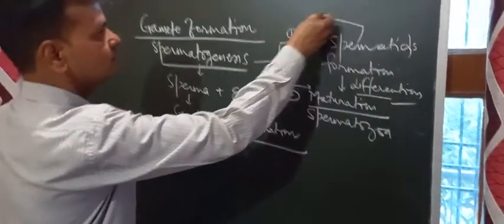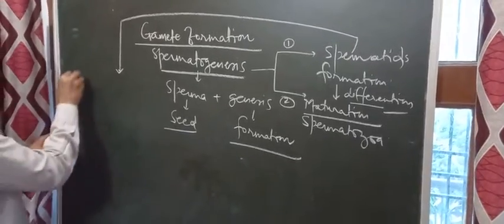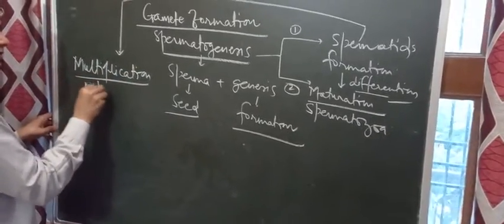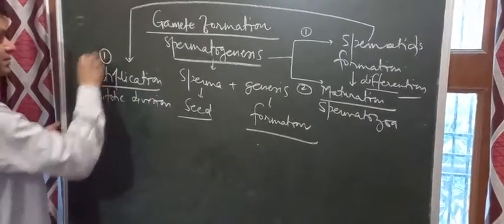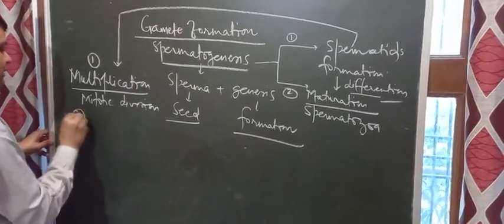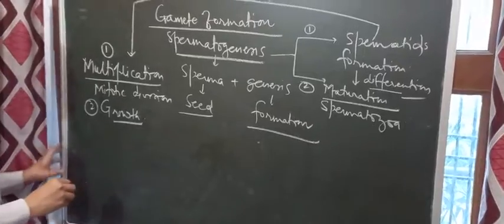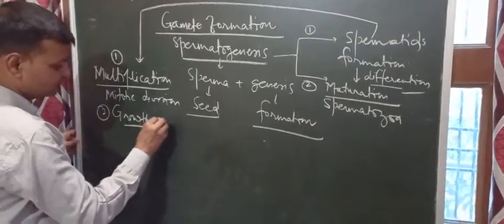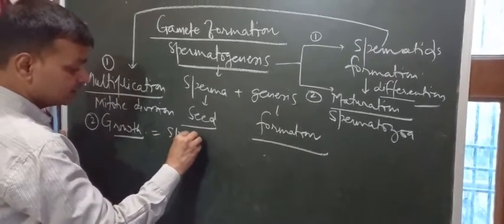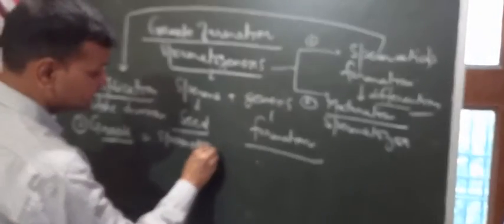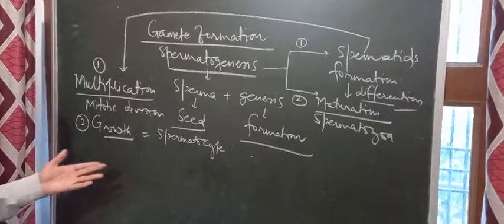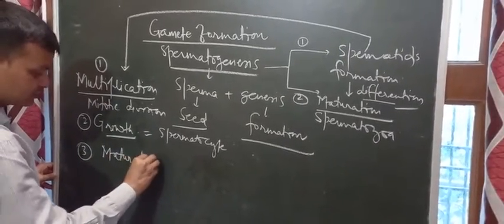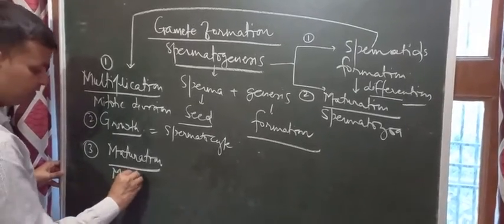The spermatid formation process is divided into three stages. The first is the multiplication phase, which is purely a mitotic division. This is followed by the growth phase, where there is synthesis of cell content so the cell grows in size, resulting in the formation of the primary spermatocyte. The third phase is the maturation phase, during which meiotic division takes place.